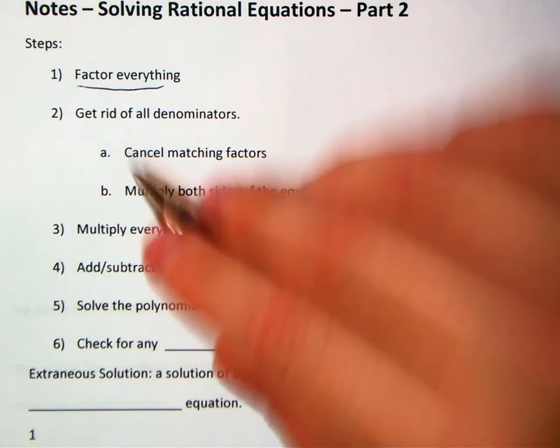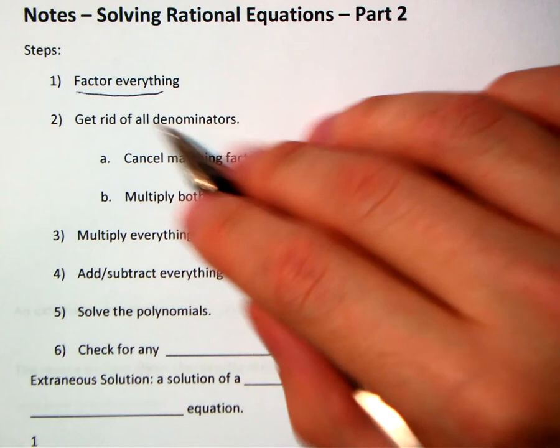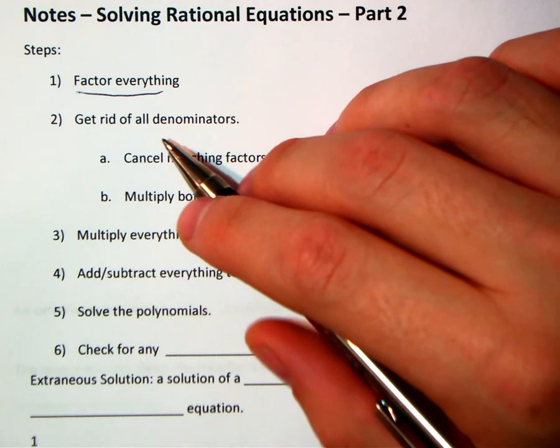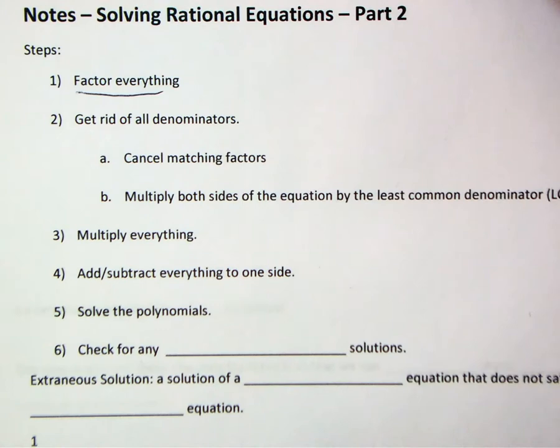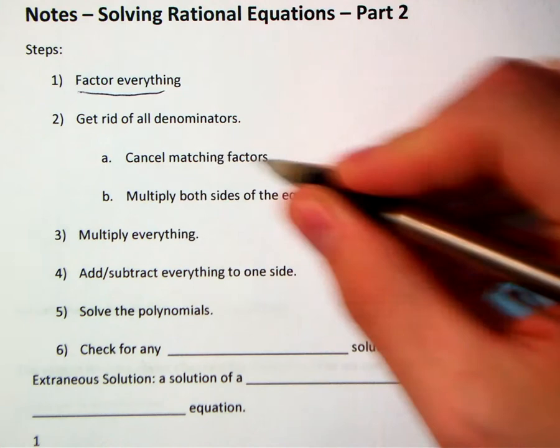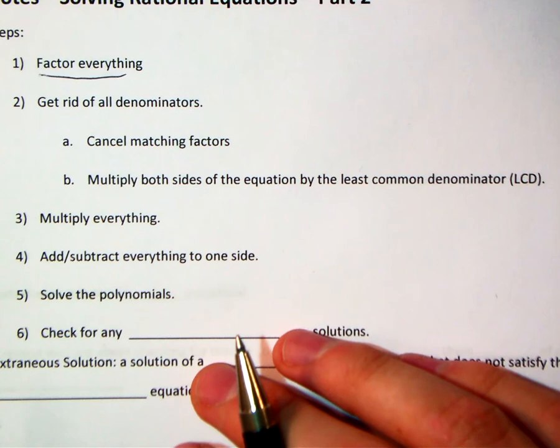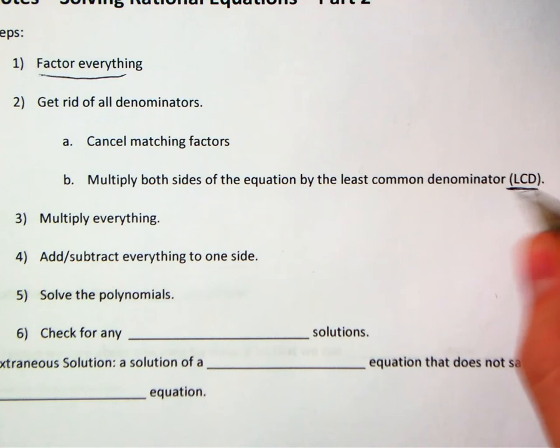We're not just going to be able to skip it. Second step: get rid of all denominators. The big thing that's getting in the way of us being able to solve a rational equation is the fact that there are x's in the denominators. So if we can get rid of those, we can move forward. There are two ways to do it: if we see matching factors in any fraction, we can cancel. And we can always multiply both sides of the equation by the least common denominator, which is often abbreviated LCD.